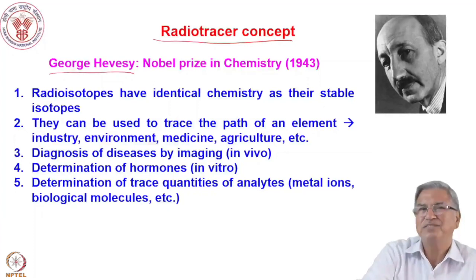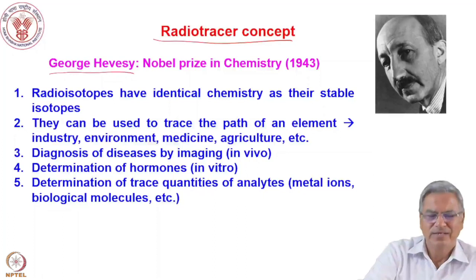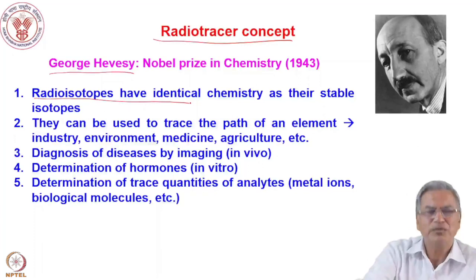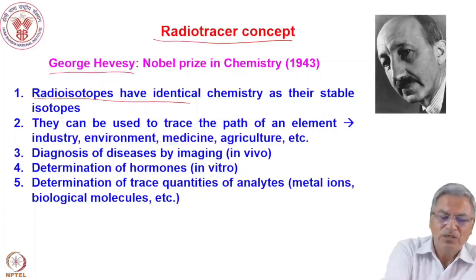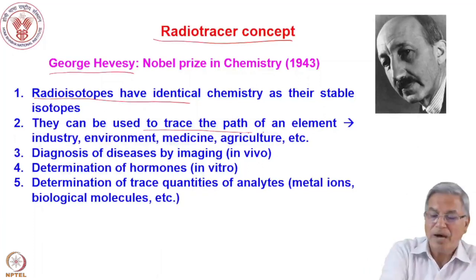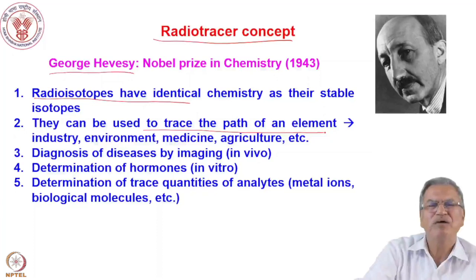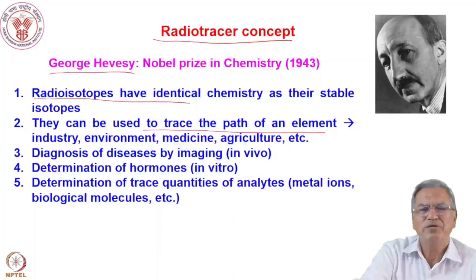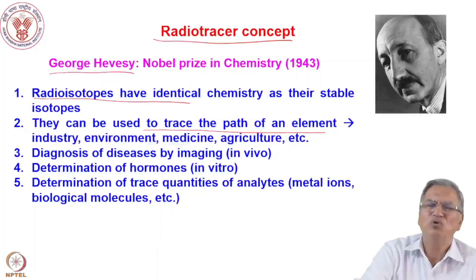He actually traced the path of food using lead-210 as a tracer — that is the meaning of a radio tracer. The concept is that radioisotopes have the same chemistry as their stable isotopes, so you can use them to trace the path of an element. For example, in a process where sulfur is used, you can mix radioactive sulfur-35 with the reactants and know where the radioactive sulfur is going.